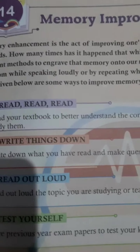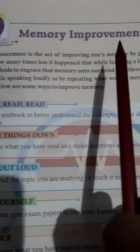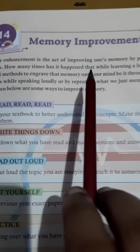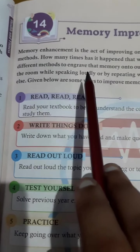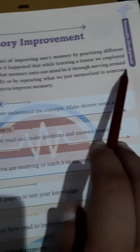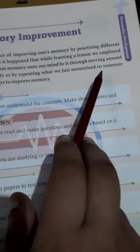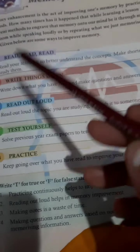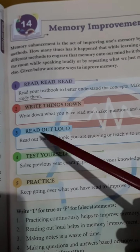Our next chapter is chapter 14 — memory improvement. Memory enhancement is the act of improving one's memory by practicing different methods. How many times has it happened that while learning a lesson, we employed different methods to engrave that memory onto our mind — be it through moving around the room while speaking loudly or by repeating what we just memorized to someone else. Given below are some ways to improve memory.